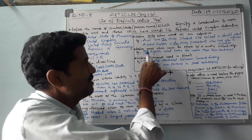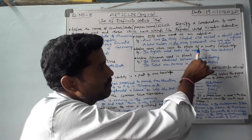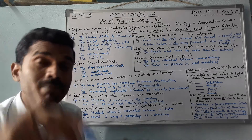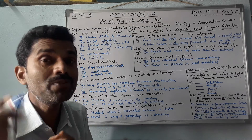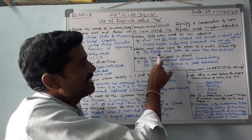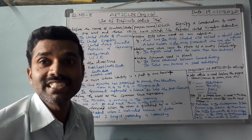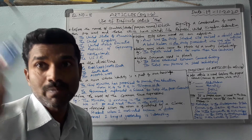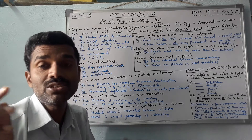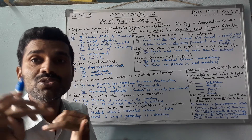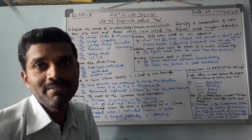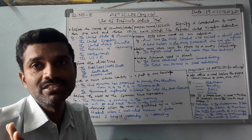Next, before nouns which name the people of a country collectively, we should use the definite article 'the'. For example: 'The English ruled India for more than two centuries.' The English means the English people. Similarly, 'the rich' means rich people, 'the blind' means blind people, 'the injured' means the injured people.